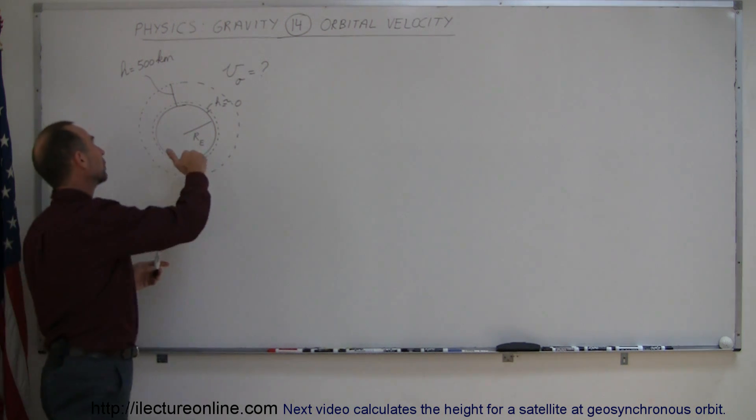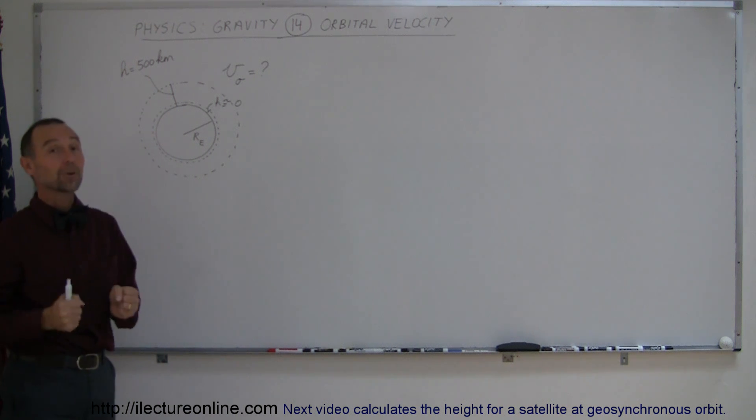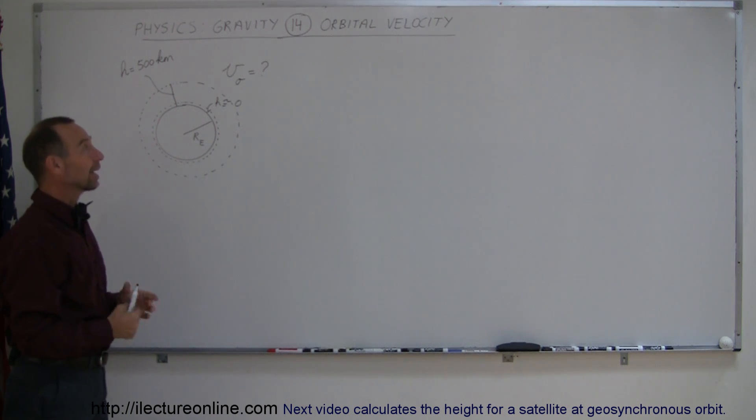Later on we'll take a look at a real orbit - let's say a satellite being 500 kilometers above the surface of the Earth, which is of course a lot more realistic. How do we do that?